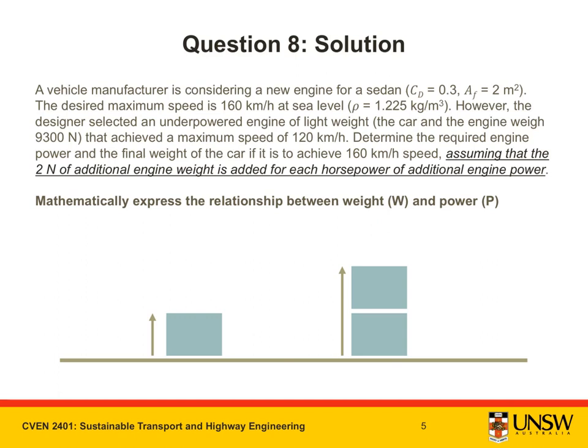Let's discuss this sentence here that gives us a relationship between additional engine weight and additional engine power. This will also help us mathematically express this relationship between weight and power that has been provided to us. This will be a crucial equation in our set of simultaneous equations. This diagram should help. Let's say that one additional engine power is this block here.